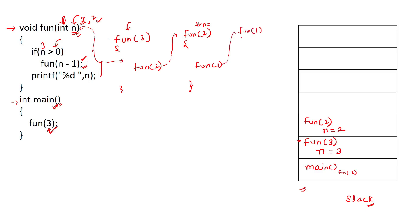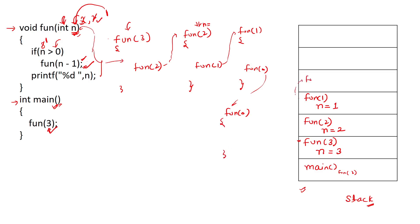Fun(0) is called and a new activation record is created with n equal to 0. Now the if condition — n greater than 0 — is false because n is 0. So we fall through to the printf line. The value of n in this function body is 0, so 0 will be printed first.